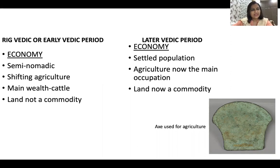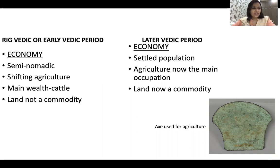Their main wealth was cattle wealth, because they were constantly on the move and could not carry land or any other commodity. It was a basic society — there were no weights, no currency, nothing. Land was not a commodity.